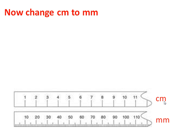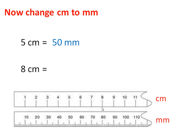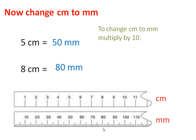Now change centimetres to millimetres. Five centimetres equals fifty millimetres. Eight centimetres equals eighty millimetres. To change centimetres to millimetres, multiply by ten.